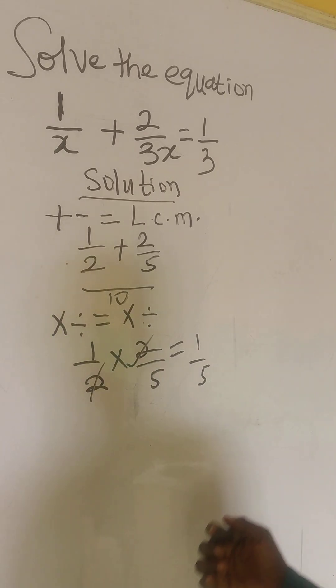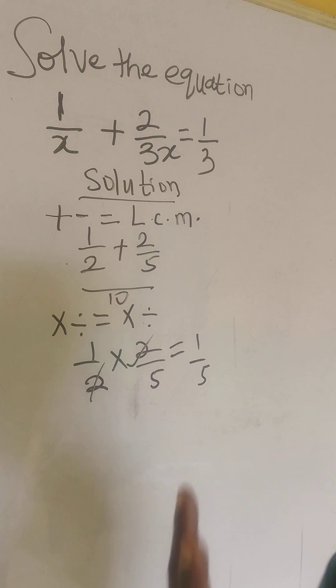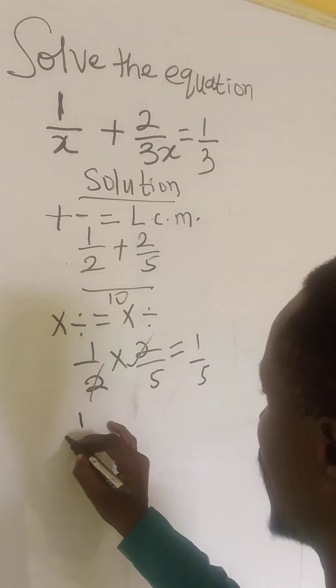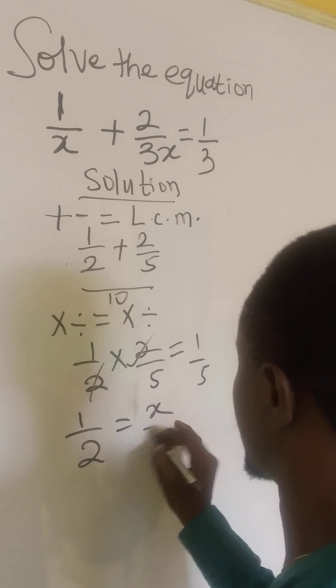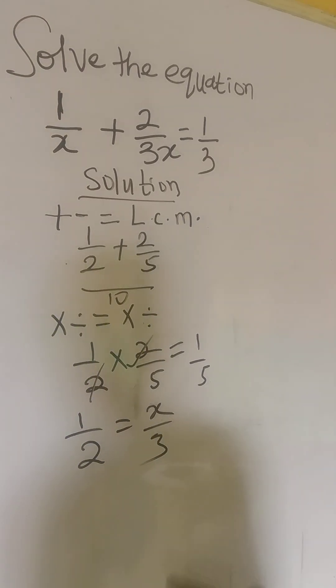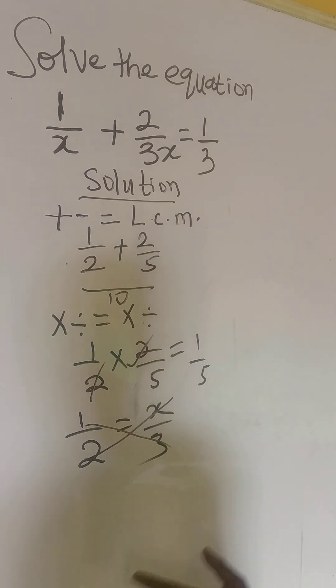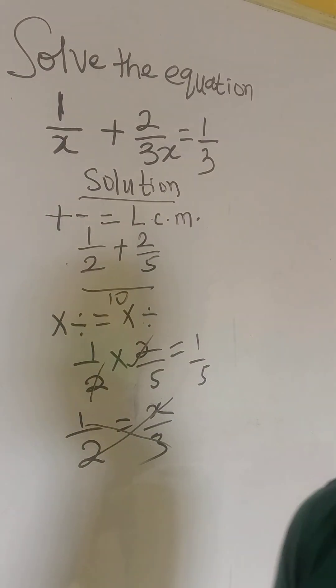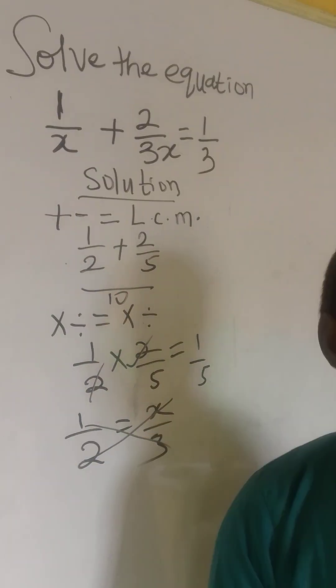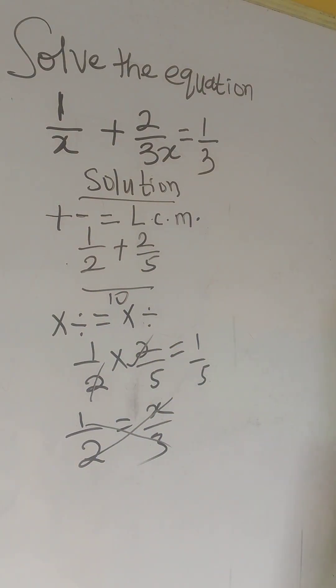And the last one is, when two fractions are separated by equal to sign, you have 1 over 2 equals to x over 3. What we do here is to cross multiply. So, these are the three sets that we have. We have more, but these are the major ones that we are always seeing.